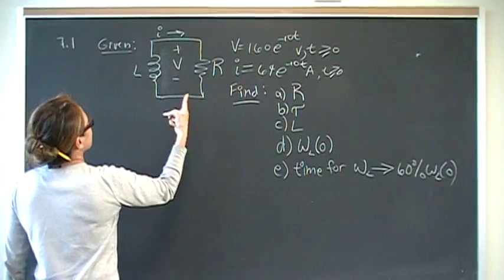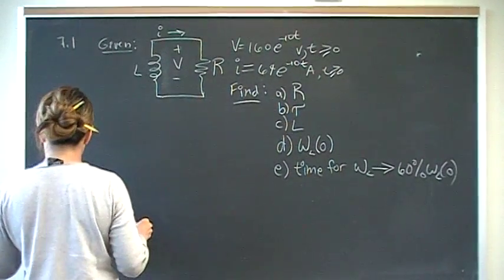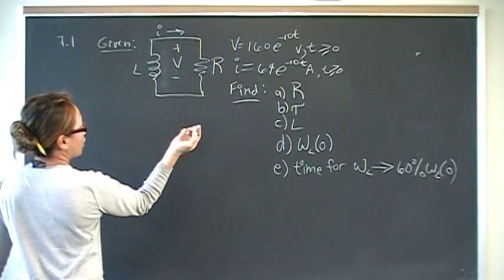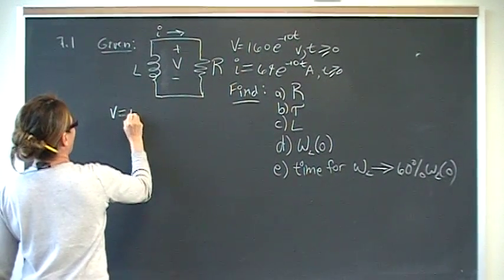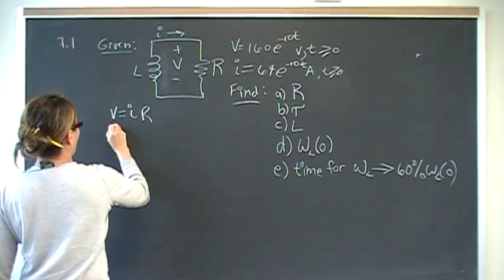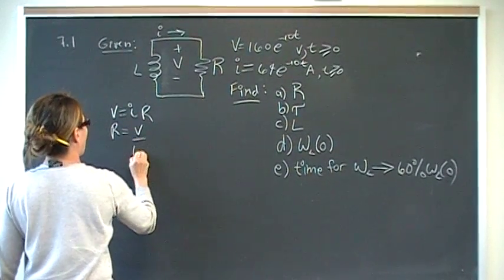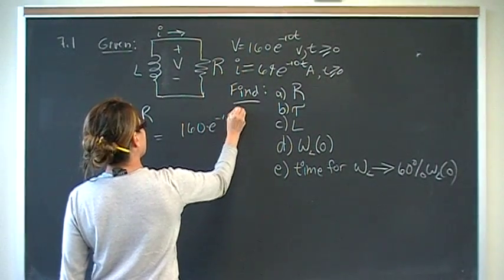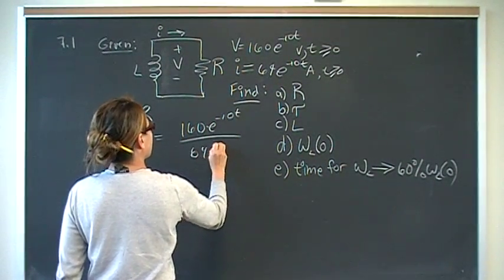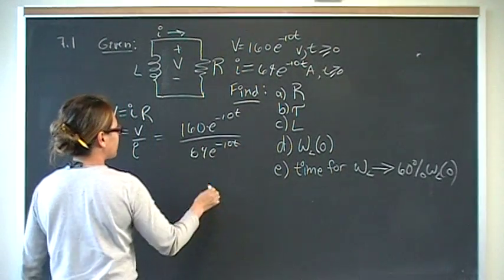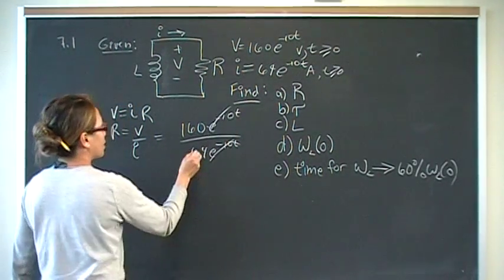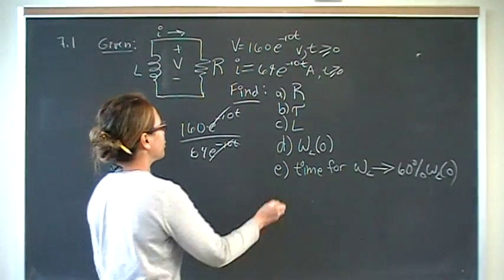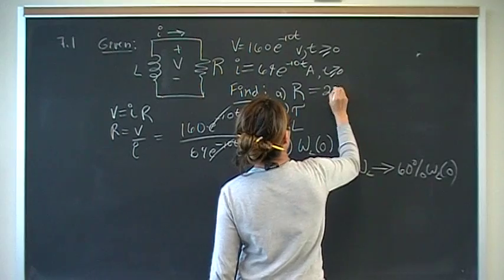To find resistance, we just turn to Ohm's law, right? We have V equal to IR. So R is equal to V over I. That's 160e to the negative 10t over 64e to the negative 10t. The e's cancel out. And when you put 160 over 64 into your calculator, you should get 2.5 ohms.